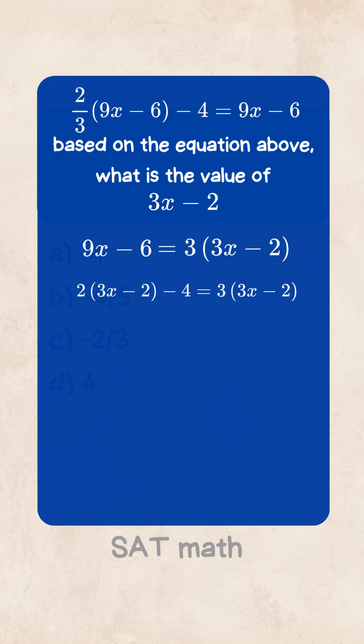Next move, subtract the left-hand chunk, 2 times the expression, from both sides. Bingo! You're left with just the expression itself: 3x - 2 = -4.